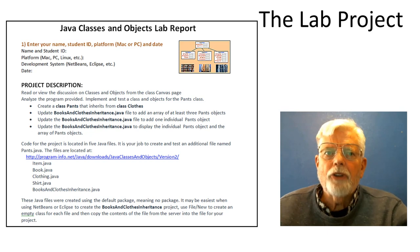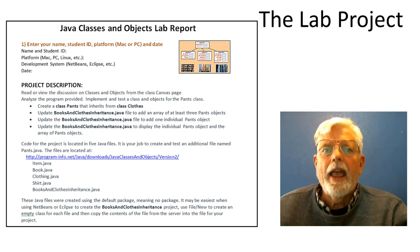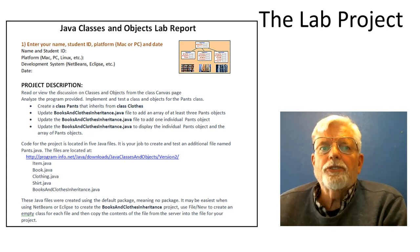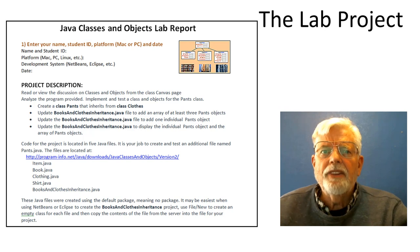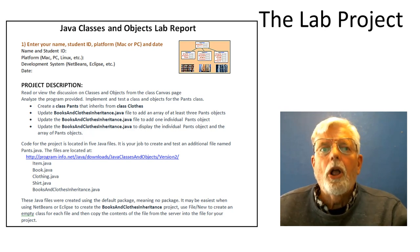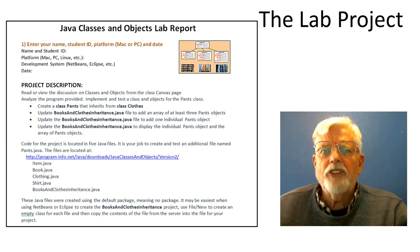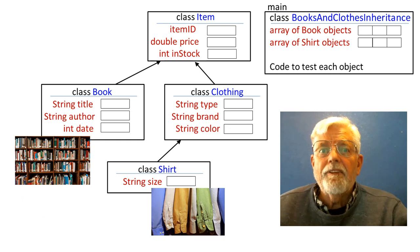I am providing the code to help you get started on the project. The code includes the class definitions for books and shirts, and code in main to implement objects and test these objects. You need to create a class for pants that inherits from class Clothes. Also, update code in the main method, BooksAndClothingInheritance.java, to add an array that contains at least three pants objects. Also, add code in main to display individual fields from the pants objects and utilize the toString method to display fields as selected by the toString method.